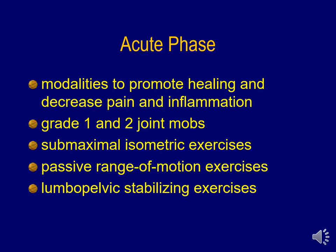Just like any other area, when we describe individuals with hip pain, we're still going to use these different phases of tissue healing. When we're dealing with individuals in the acute phase, it's going to be important to think about techniques we can use to minimize pain and inflammation. We can use modalities, relative rest, assistive devices to offload the area, grade one and two joint mobilizations, gentle passive range of motion, submaximal isometric exercises through the range, and beginning to work on lumbopelvic stabilization exercises to ensure that core strength is maintained. Those are all important components of this early phase of acute rehabilitation.